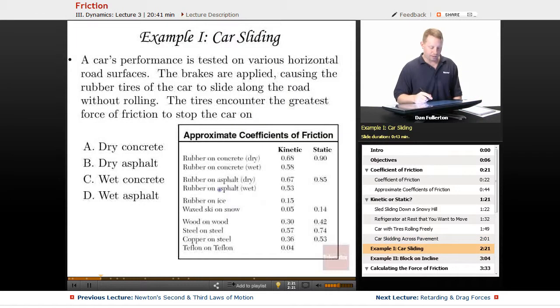Let's take the example of a car sliding. A car's performance is tested on various horizontal road surfaces. The brakes are applied, causing the rubber tires of the car to slide along the road without rolling. Without rolling. They're sliding. So right away we're thinking, kinetic.